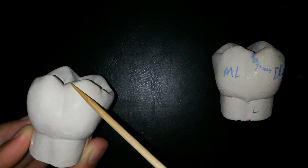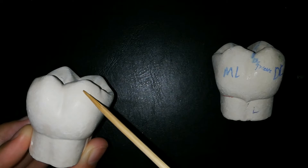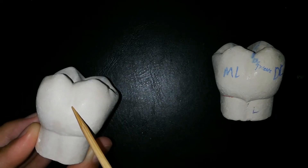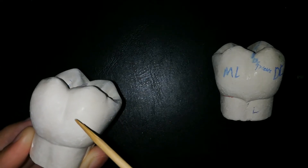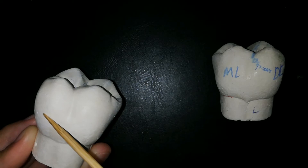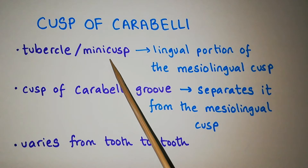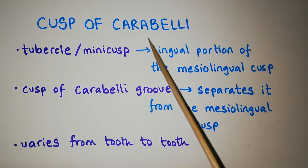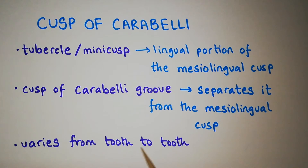The mesio-lingual cusp is larger and longer than the disto-lingual cusp. In fact, the mesio-lingual cusp is the largest cusp on this tooth. The disto-lingual groove may end in a lingual pit or simply fade out. The lingual ridge of the mesio-lingual cusp is larger and bulkier than the lingual ridge of the disto-lingual cusp. The lingual height of contour is located in the middle third. A tubercle or mini-cusp located on the lingual portion of the mesio-lingual cusp is called the cusp of Carabelli. A groove separates this cusp from the mesio-lingual cusp and is called the cusp of Carabelli groove. The prominence of this cusp varies from tooth to tooth.